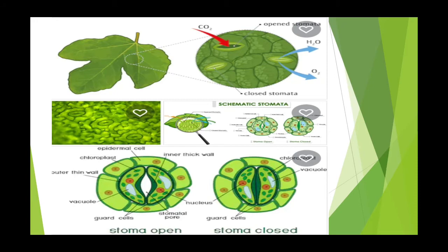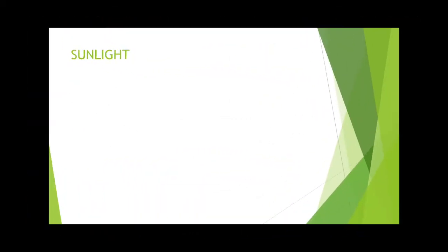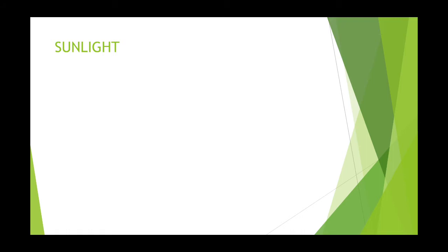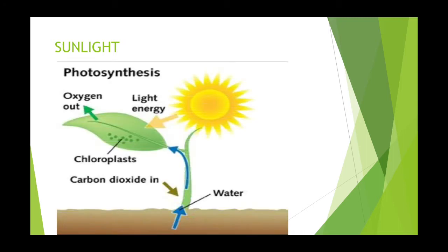The next raw material is sunlight. Sunlight is the light and energy that comes from the sun. During photosynthesis, plants use the energy of sunlight to prepare food. That is why the food-making process in plants is called photosynthesis. Photo means light, synthesis means to combine.